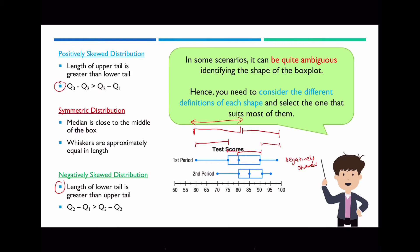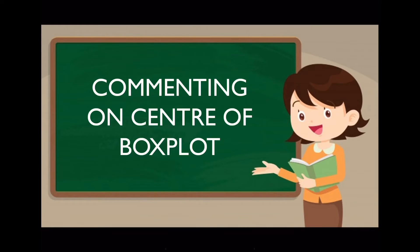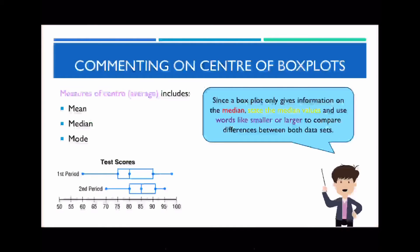Generally speaking, you're not going to see examples where it is quite ambiguous, but you may come across it. The next thing I want to talk about is commenting on the center of a box plot. Previously I said there are three ways to measure the center: mean, median or mode. However, since we're studying box plots, we only know the median — we can't work out the mean and mode. So all you need to do is state the median value, give the number associated with it, and use words such as 'smaller' or 'larger' to describe the differences between the medians.